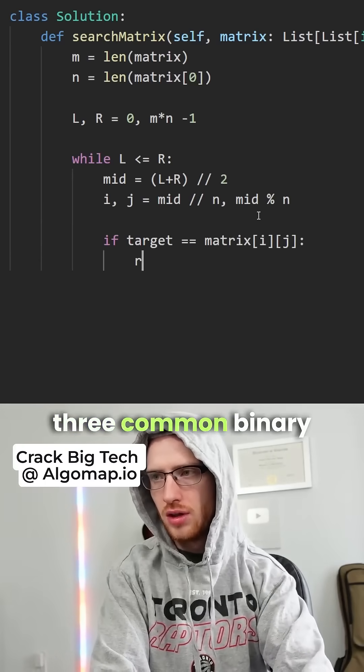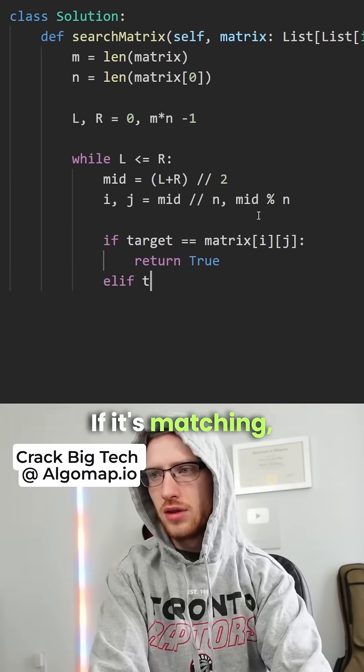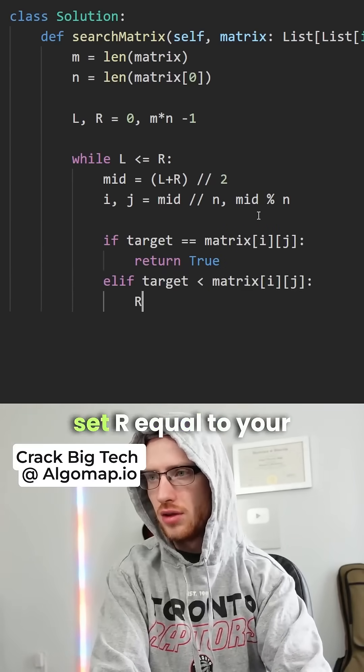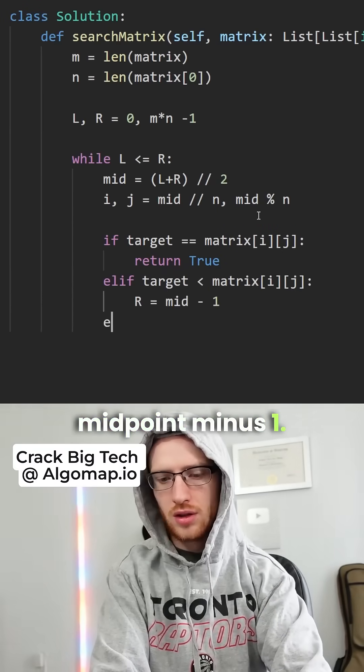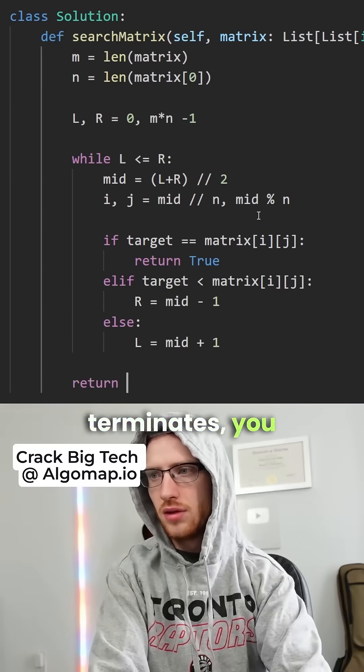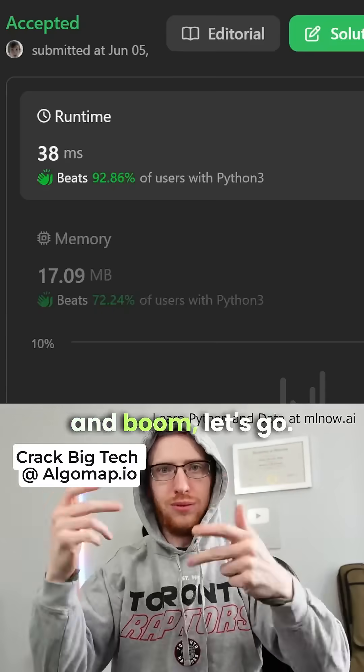Now we can do those three common binary search checks. If it's matching, return true. If the target is left of the midpoint, set r equal to midpoint minus one. Otherwise, set l to mid plus one. If your loop terminates, simply return false. And boom, let's go!